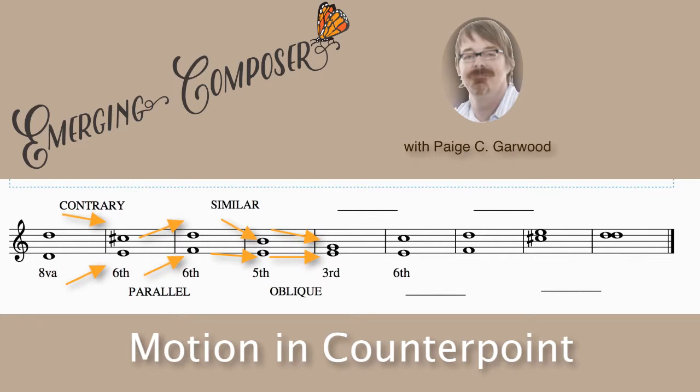Now let's look at the next motion and see if you can tell me what motion is implied. We have a third going to a sixth — the bottom note stays the same, and the top voice moves from a G up to a C. What kind of motion has one voice staying the same and the other voice moving? It's oblique. Very good.